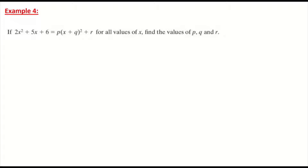This is example four. We're told that 2x² + 5x + 6 equals p(x + q)² + r, and we want to find all of the values for p, q, and r. Write it out and put our equal sign between them: 2x² + 5x + 6 is equal to p times (x + q)² + r.